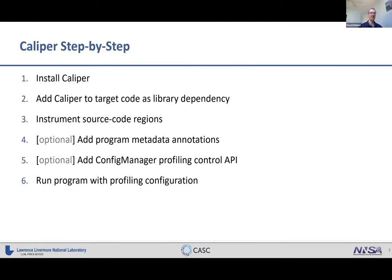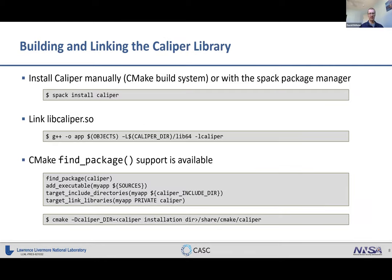You can also control profiling within the program via a special API, though this is optional. Finally, you run your program with a profiling configuration enabled, which records performance data. Let's go through these steps in more detail, starting with how to obtain and build Caliper. It has a CMake build system, or the easier route is to use the Spack package manager.